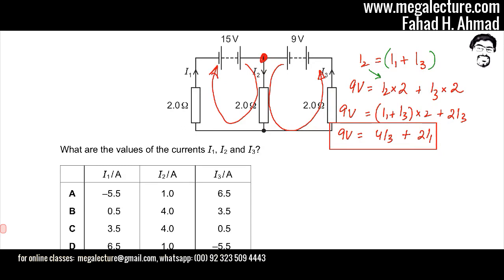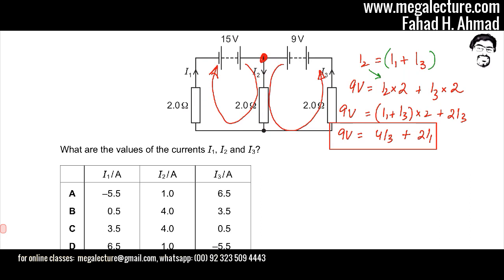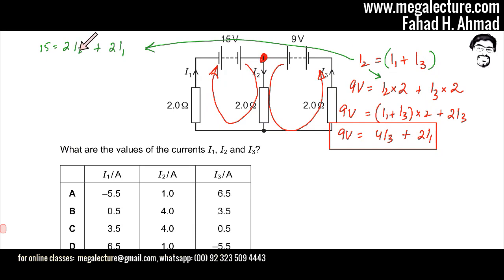Let's look at this circuit and construct an equation based on Kirchhoff's second law — conservation of energy. For the 15 volt loop, the voltages across the elements are going to be the same, so: 15 = 2·i2 + 2·i1. That's the equation I've come up with, and I'm going to substitute i2 into it using i2 = i1 + i3.